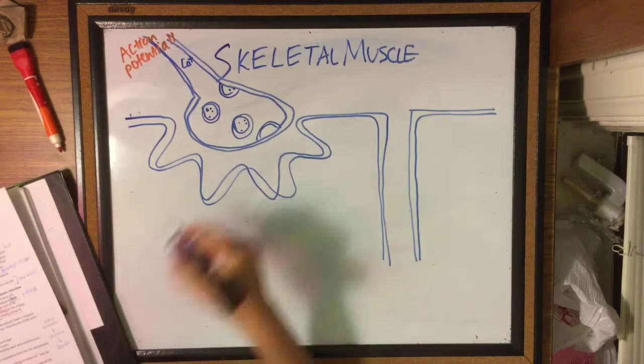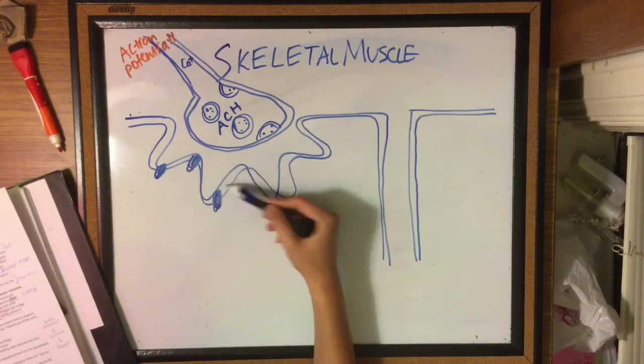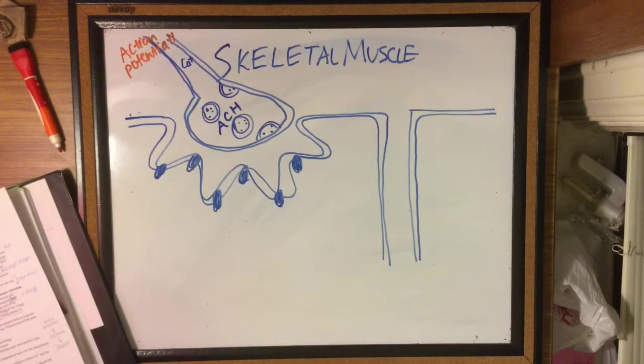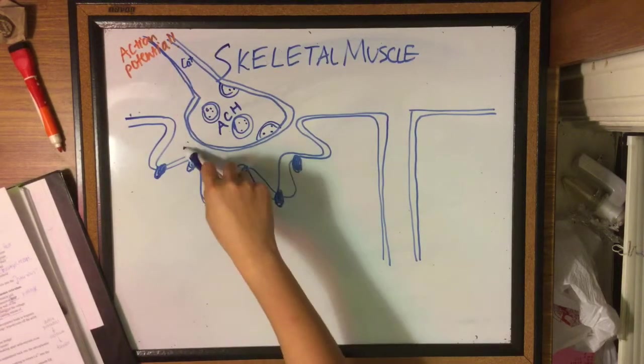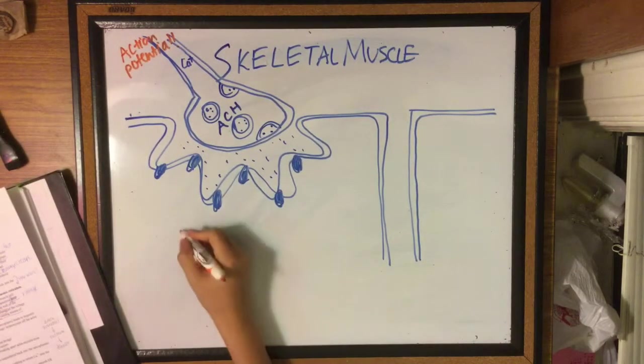The calcium ions then bind to synaptic vesicles and the synaptic vesicles contain acetylcholine, which is a neurotransmitter. The acetylcholine migrates to the cell membrane and is released by exocytosis.